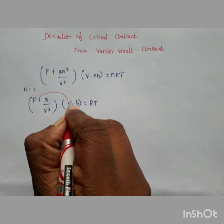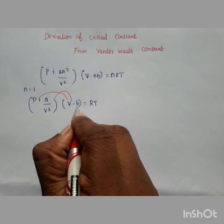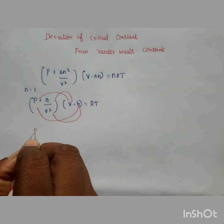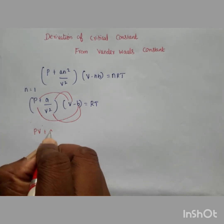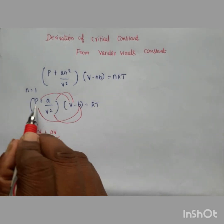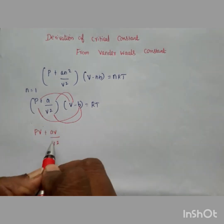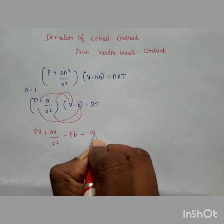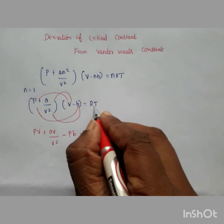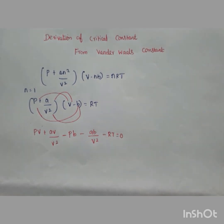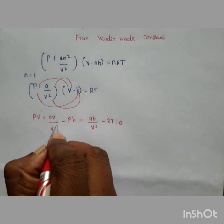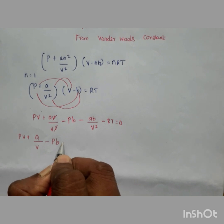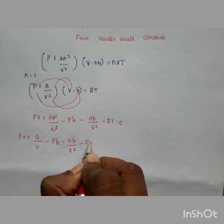Now we are going to multiply it out. We have v and a divided by v, and we multiply through. So p·v plus a divided by v² multiplied gives: p·v + a/v − pb − ab/v² − RT = 0.